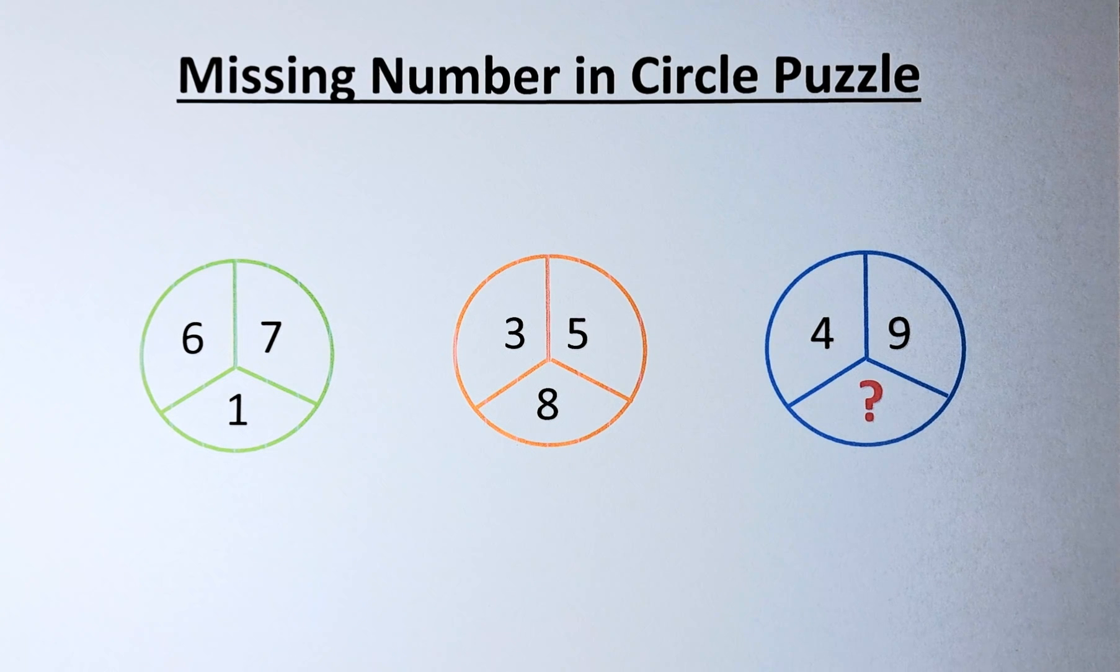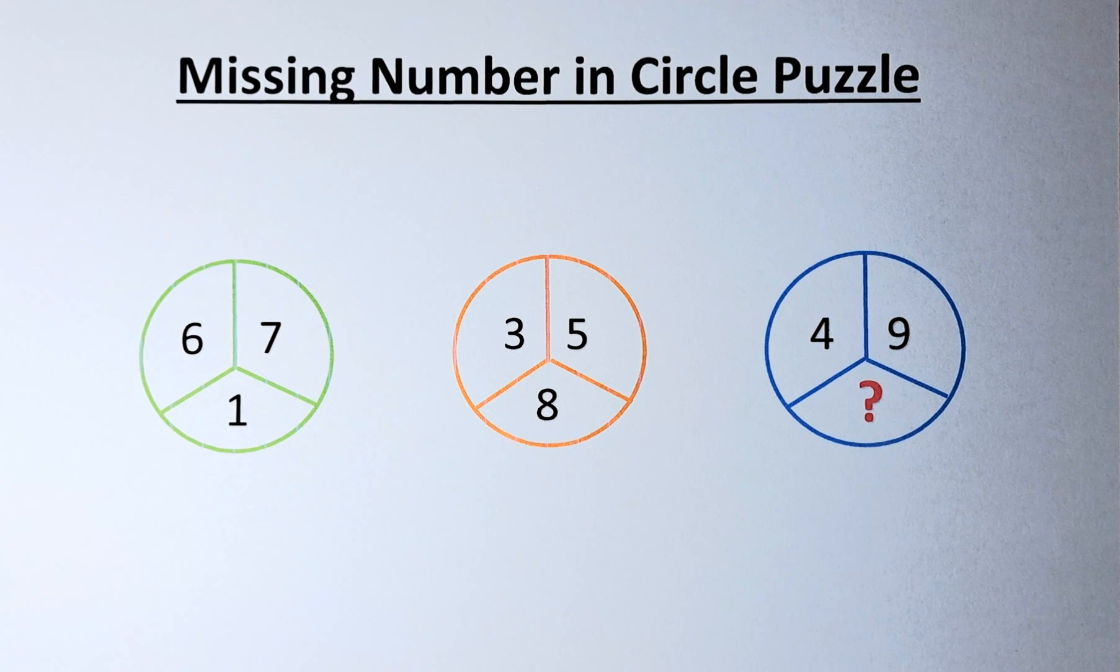In the orange circle, we have 3, 5 and 8. And in the blue circle, we have 4, 9 and a question mark.